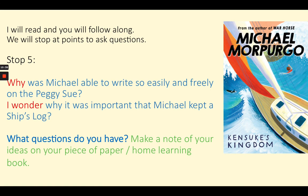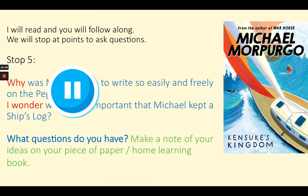'What follows are just a few chosen extracts from this log. This is how I recorded our great journey. This is how it was for an 11-year-old boy as we rode the wide oceans of the world on board the Peggy Sue.' And that's the end of Chapter 2, Year 6. I wonder why Michael was able to write so easily and freely in his log when he couldn't do that at school. And why was it important that Michael kept the ship's log? Pause the video here and write down two questions you have.